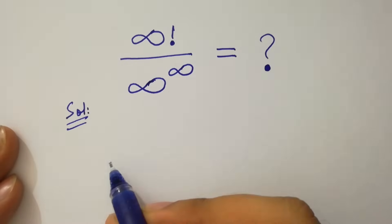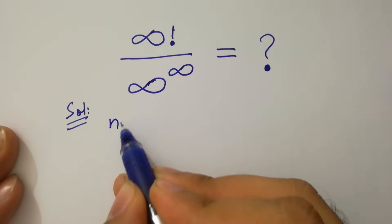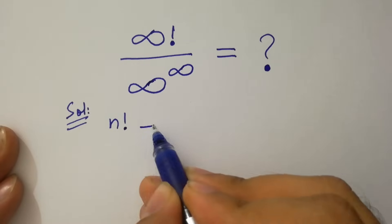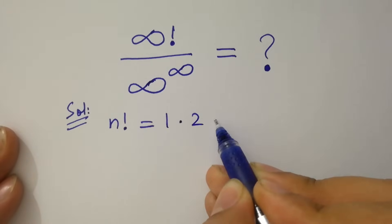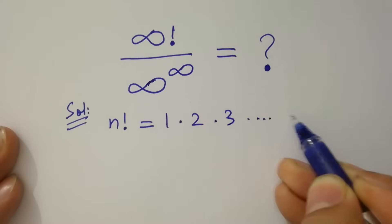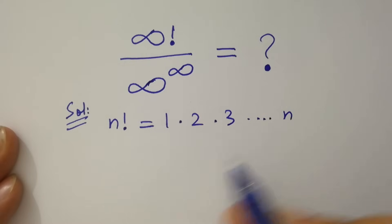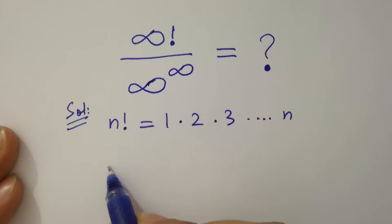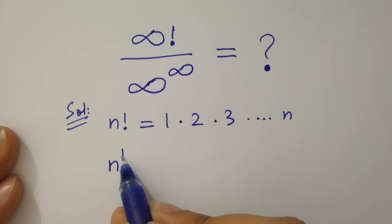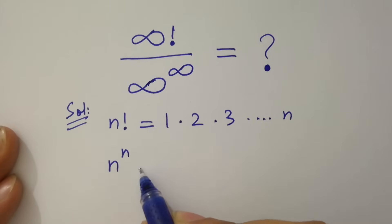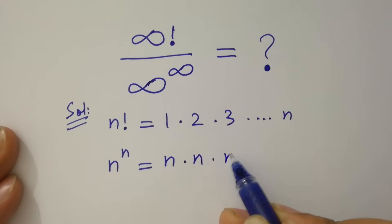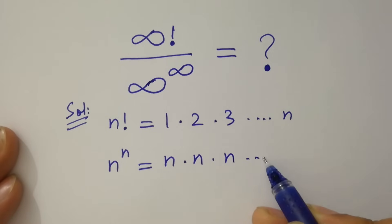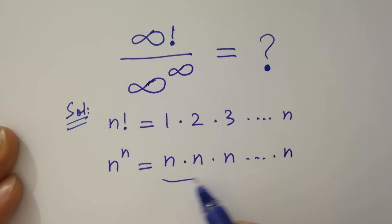As we know, n factorial equals 1 · 2 · 3 · ... · n. And n to the power n equals n · n · n · ... · n, n times.